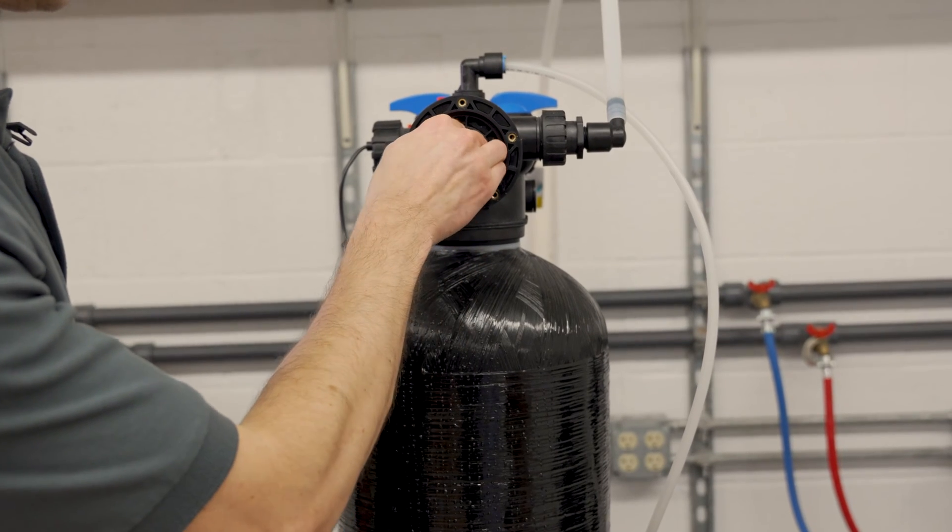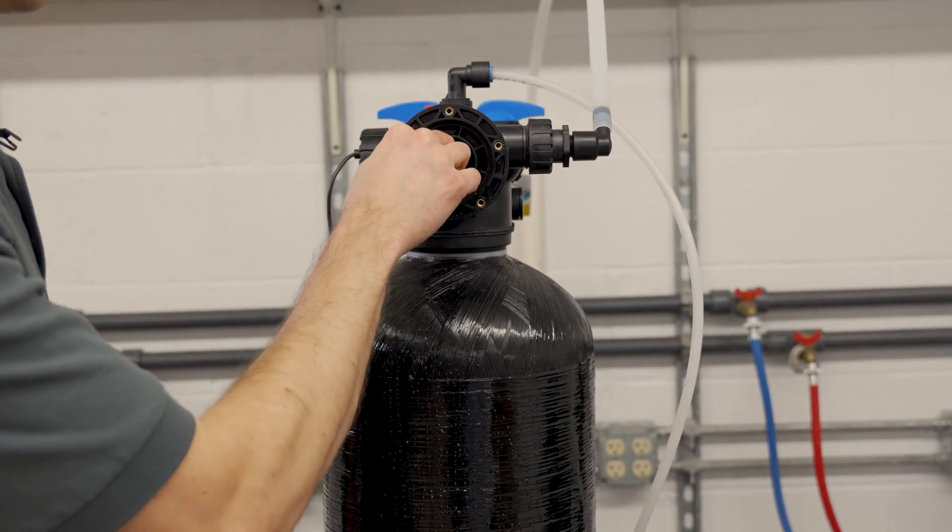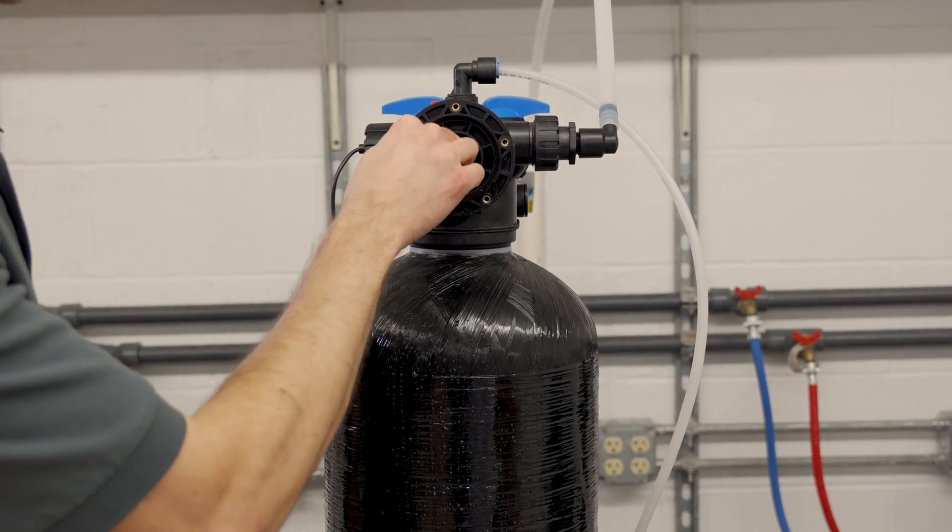When you're replacing it, just put it back in. This is keyed, so you'll need to turn it until it clicks into place. You'll know it's in the right spot when it doesn't twist anymore.